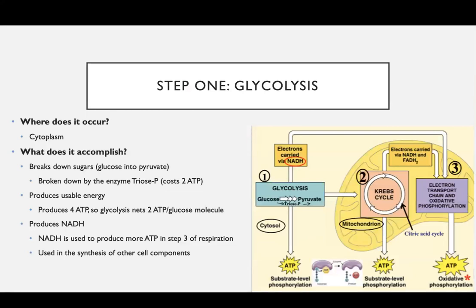Step one: glycolysis. Where does it occur? It occurs in the cytoplasm — all that pale yellow area within your cell is going to be your cytoplasm, and that's where glycolysis takes place. What does it accomplish? It's breaking down your sugars — that C6H12O6, your glucose — into pyruvate, using an enzyme called triose-P. It will use two ATP of energy, but through this process we're going to produce usable energy, netting two ATP per glucose molecule. It will also produce NADH, which will be used in step three, the electron transport chain, and for the synthesis of other cell components.